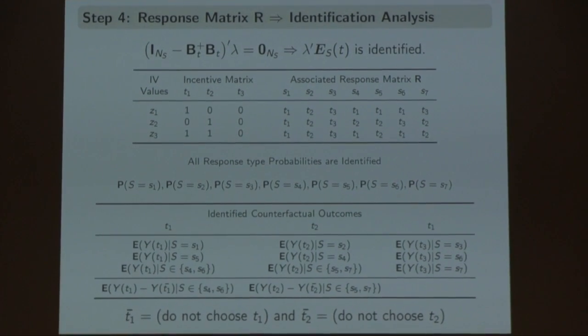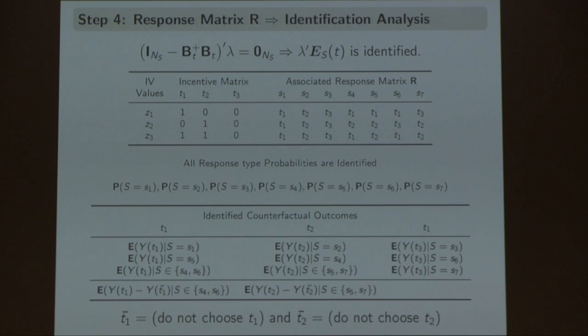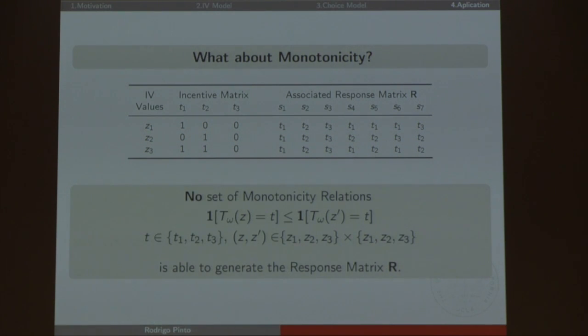The whole analysis summarizes as: I have an incentive matrix; out of this incentive matrix I have a response matrix; out of this response matrix I identify a bunch of parameters. If I manipulate the incentive matrix, I manipulate the type of parameters that I identify. Why not simply use monotonicity? Two reasons: first, I only use the weak axiom of revealed preference, which is easily defensible. Second, this specific response matrix is non-monotonic — there is no set of monotonicity restrictions like the standard ones that would generate this type of response matrix.